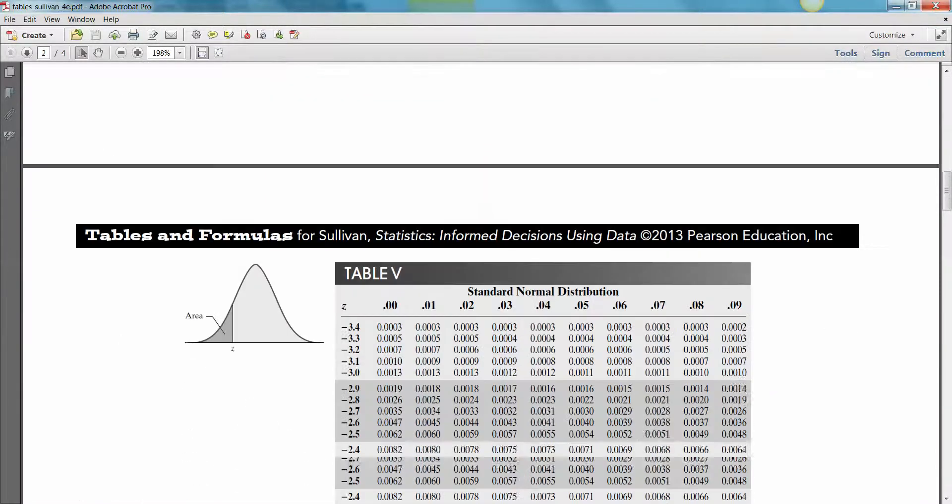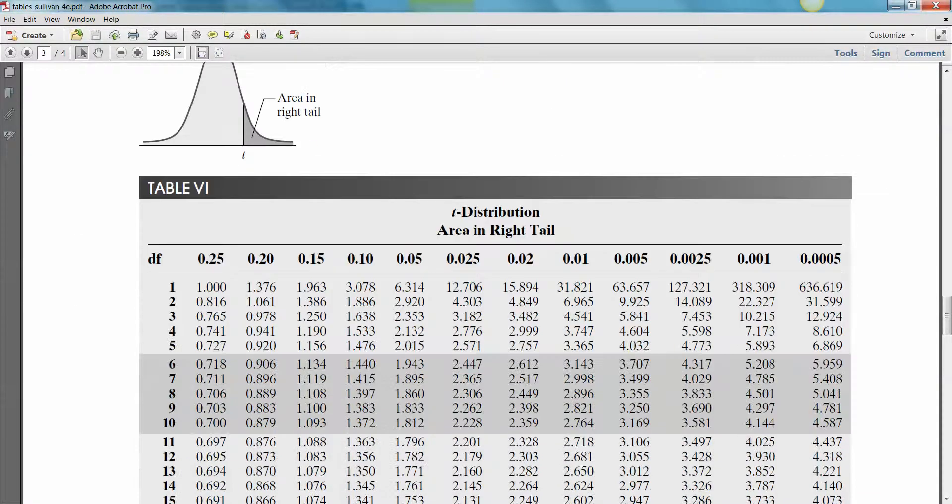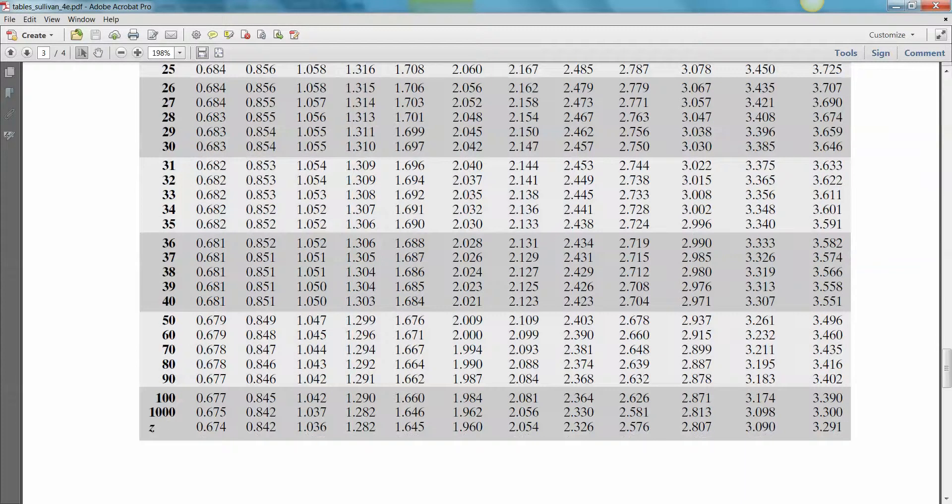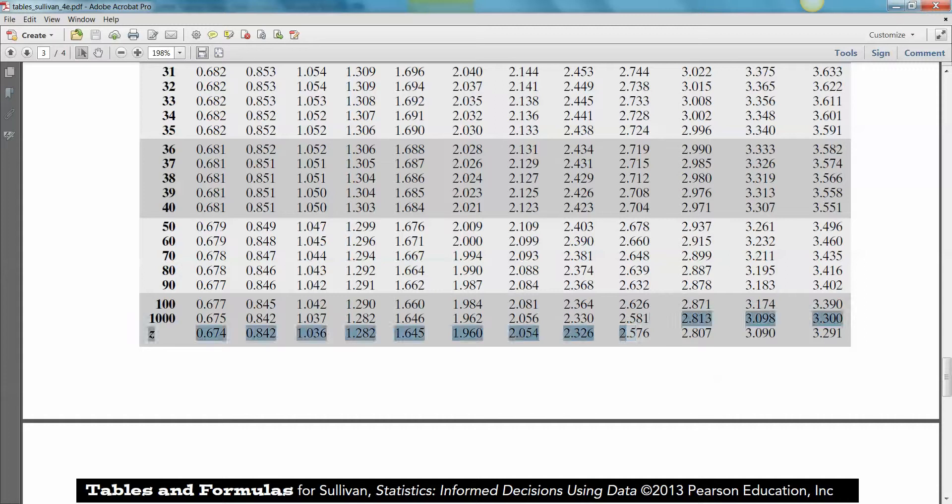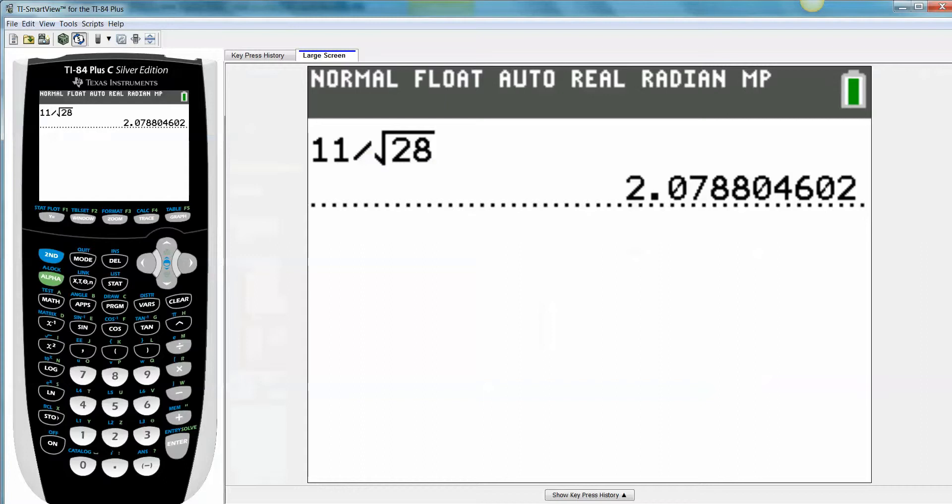So if you take your t-table, I've got to get to it, there it is, you go to the .005 column, and since we're running this on a z-distribution, a standard normal distribution, you're going to use 2.576. So there's the one on the right, the one on the left is the same but negative.